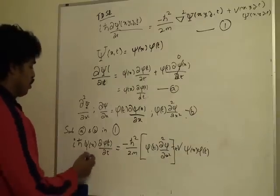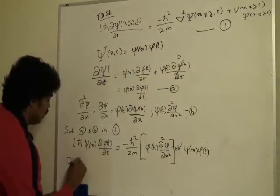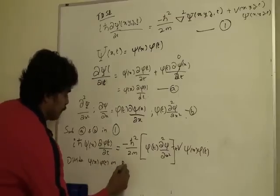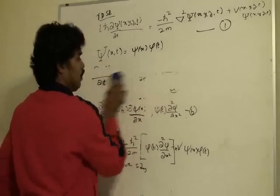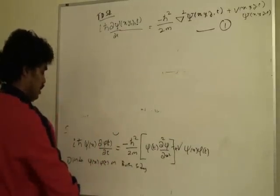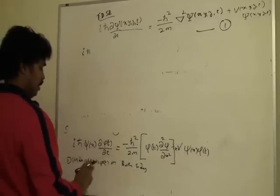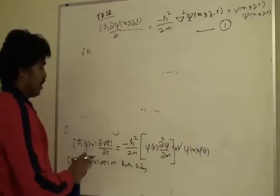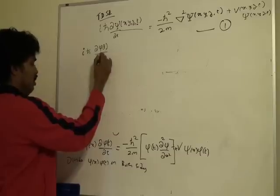So what we can do is just simplify this. We can divide by ψ of x φ of t on both sides. So if we do that, this becomes i ℏ. We divide this, then this ψ of x gets cancelled and it becomes ∂φ of t/∂t.